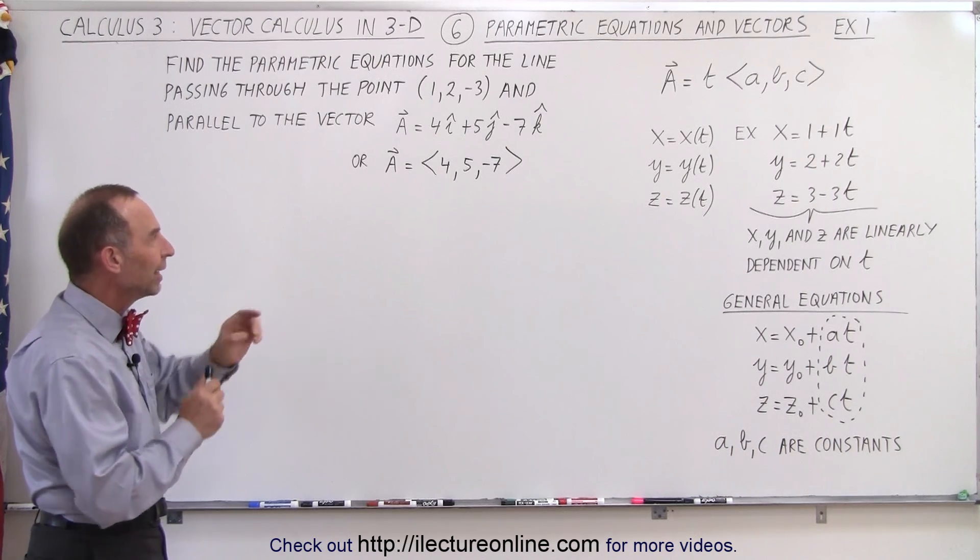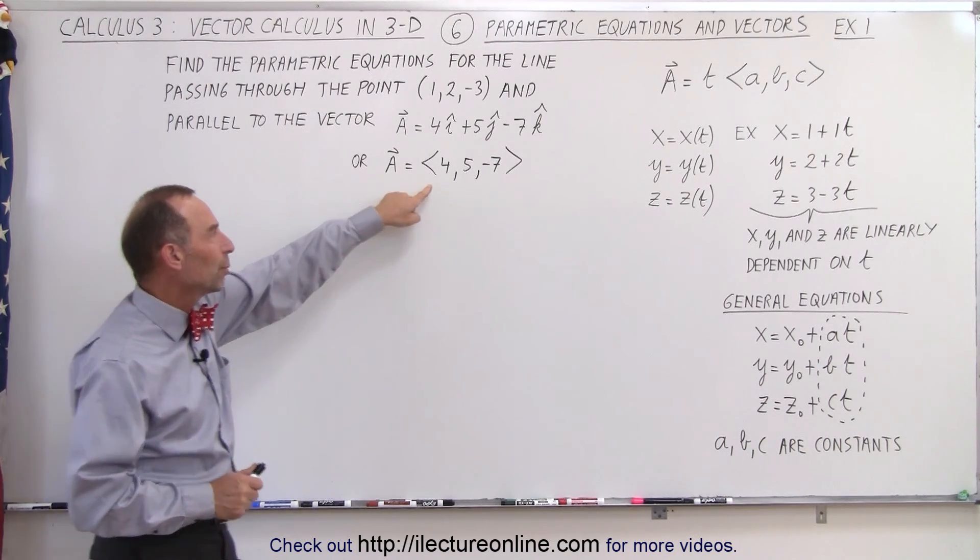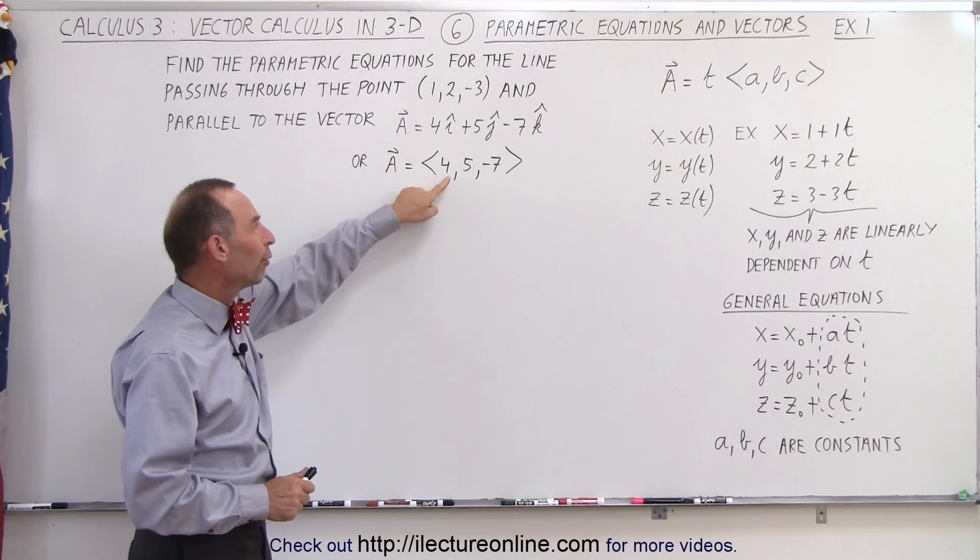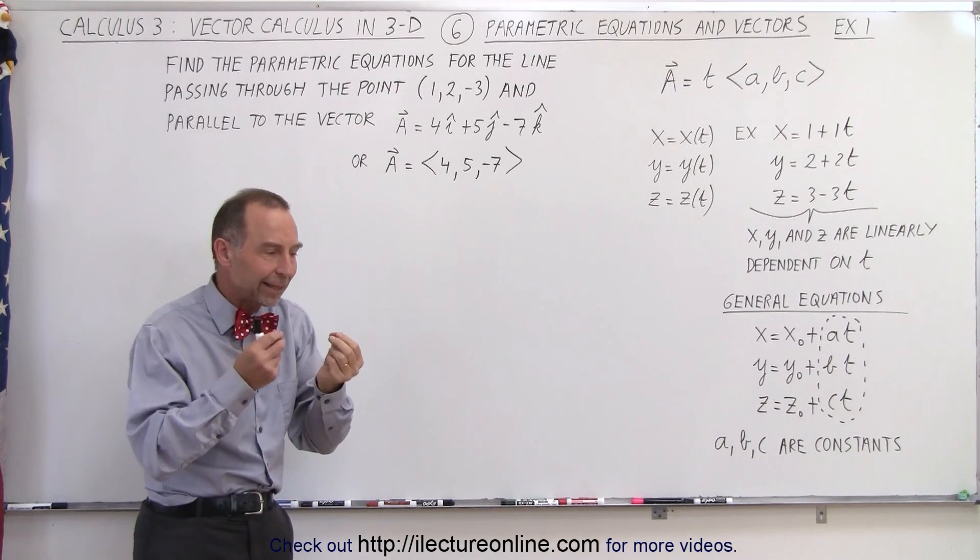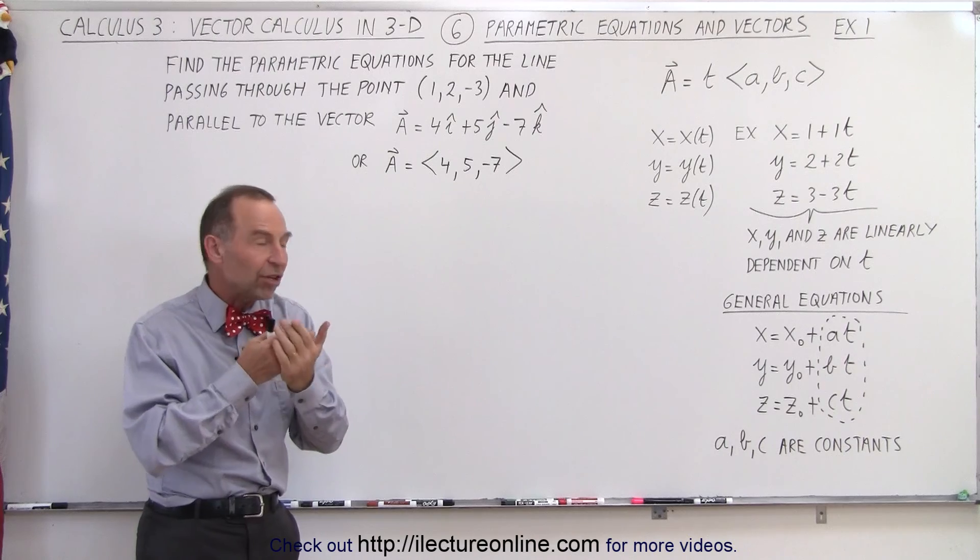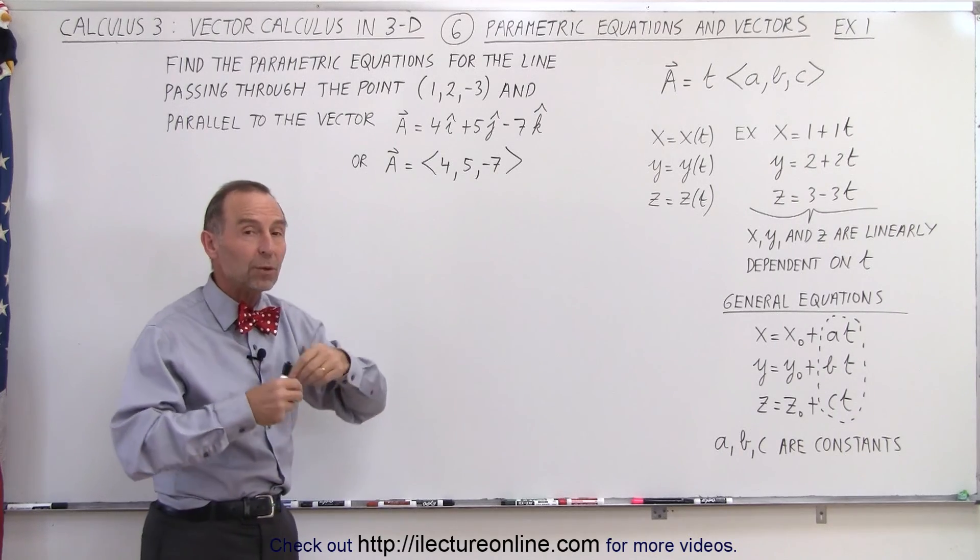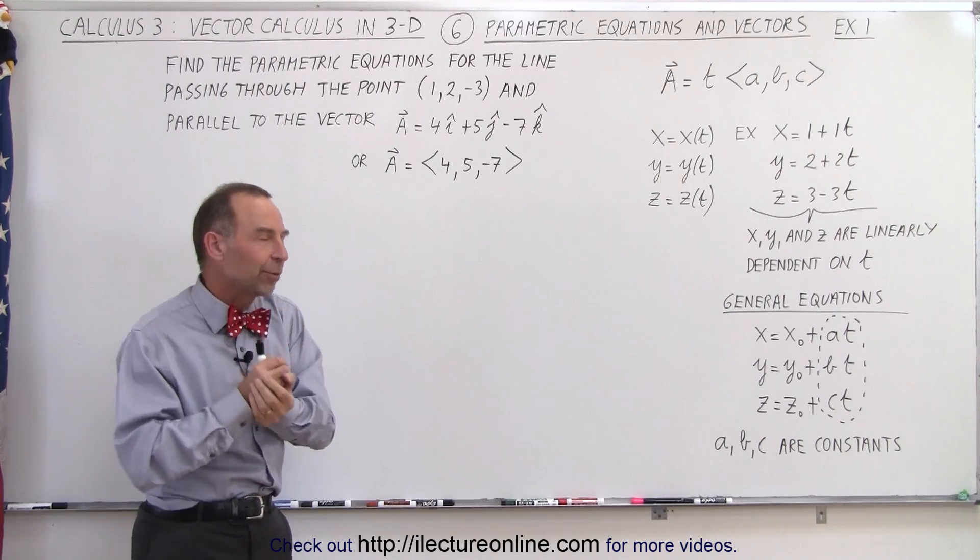So what we need to realize here is that a vector, which can be written in this format, 4, 5, and -7, are basically the amount of change in the variables x, y, and z when there's a change in the parametric variable t.